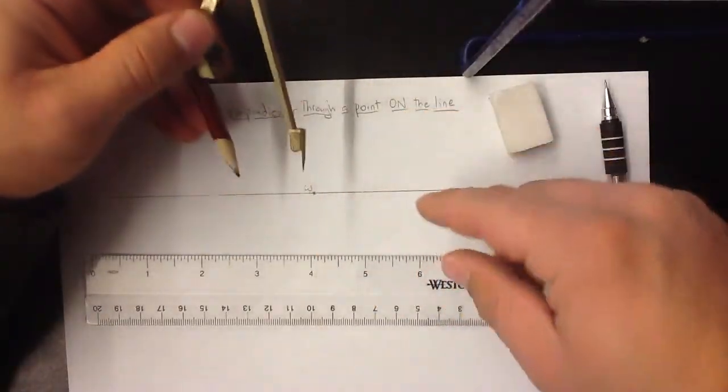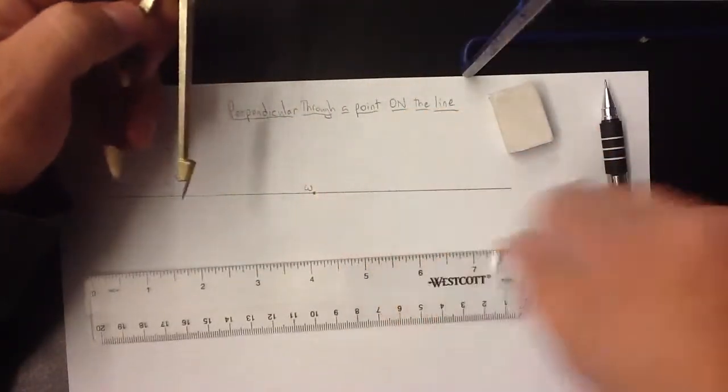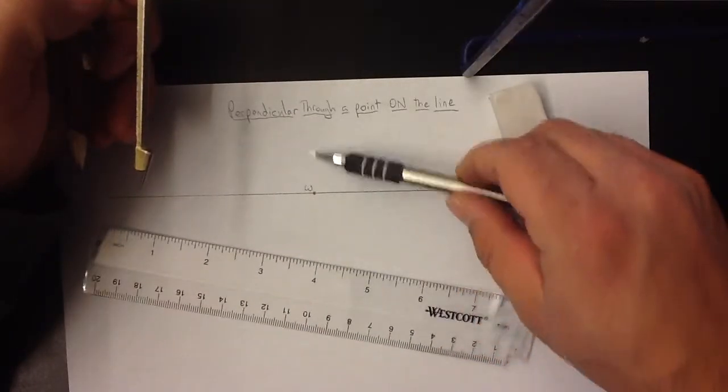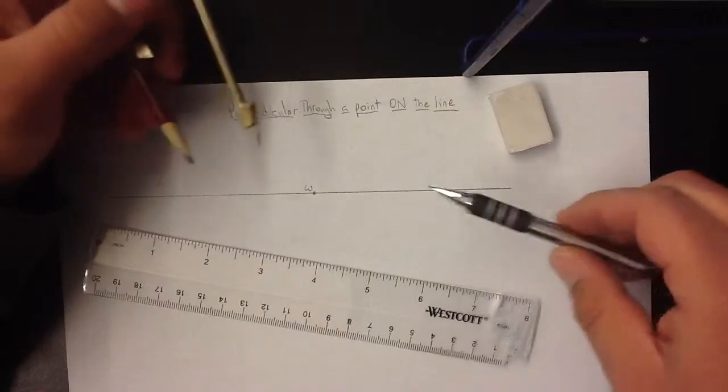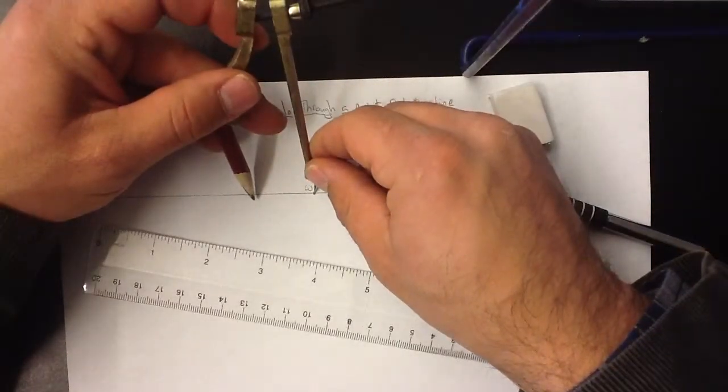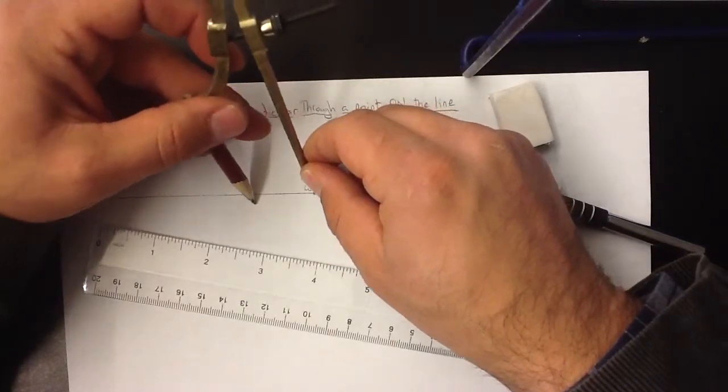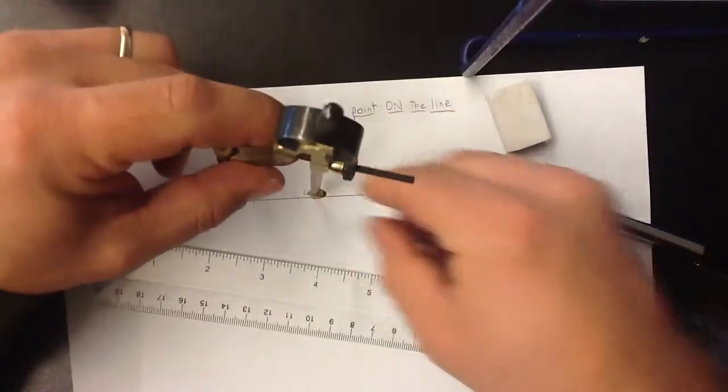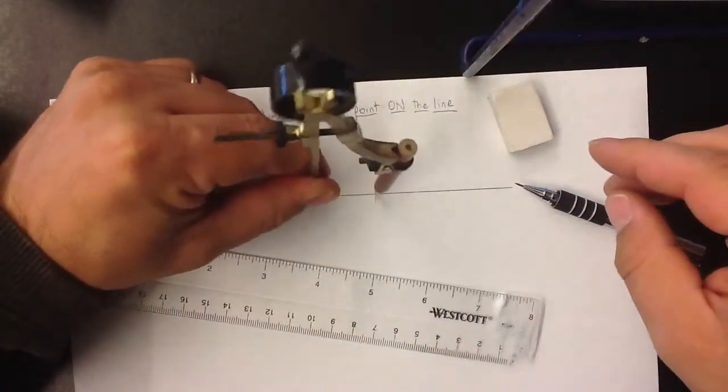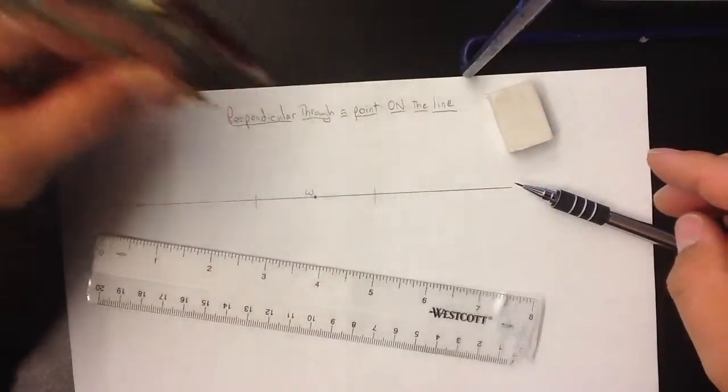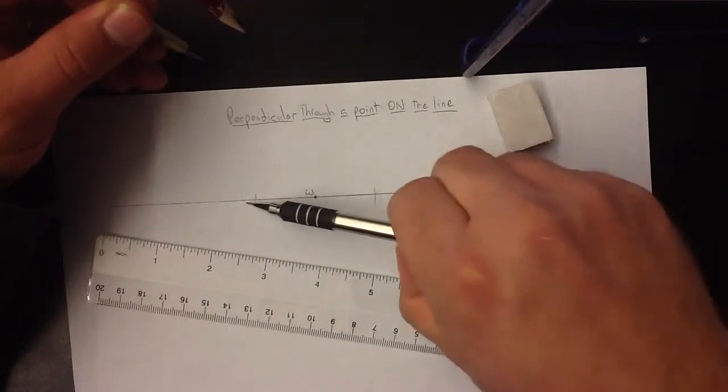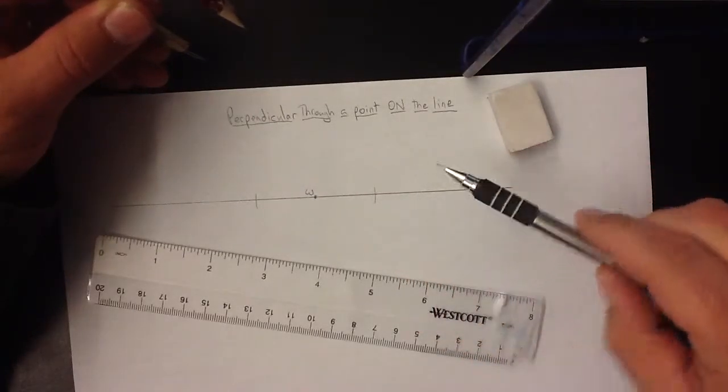And so what you're going to do, we're going to draw a perpendicular that goes 90 degrees through W across this original line. So take the point of the compass and put it on W and mark the line on one side. And then bring it around and we'll cross the line on the other side as well. So now we have two arcs the same distance away from that point W.